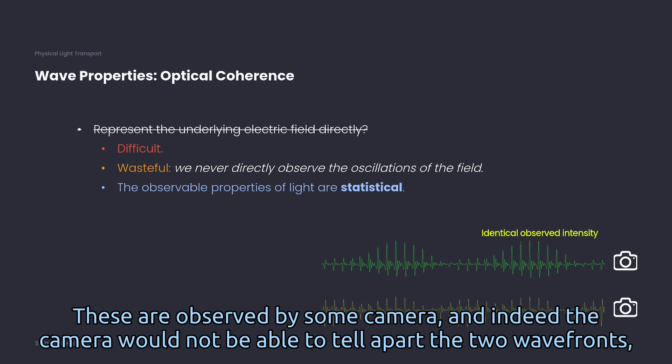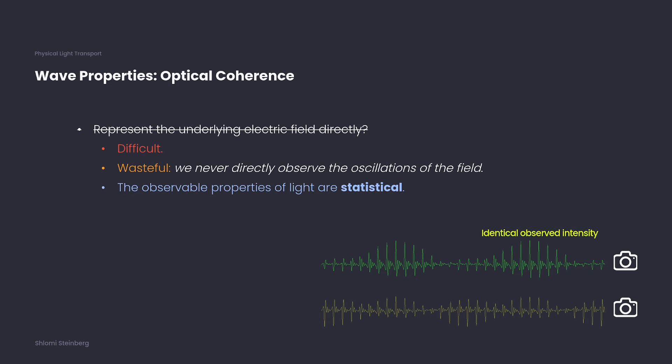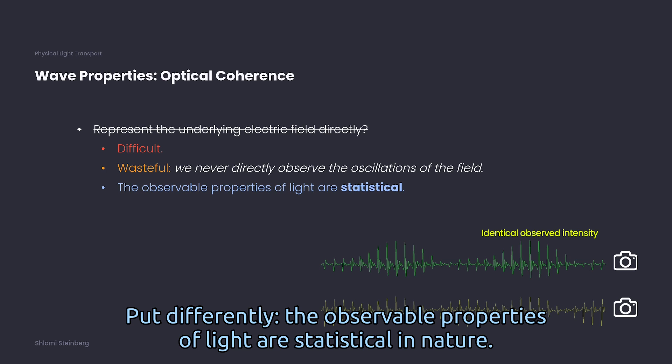Because they time average to the same observed intensity and would appear identical to us. Put differently, the observable properties of light are statistical in nature.